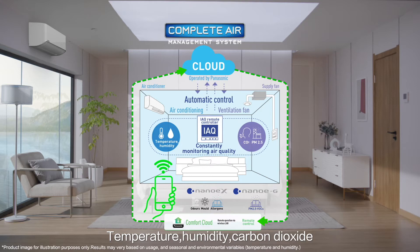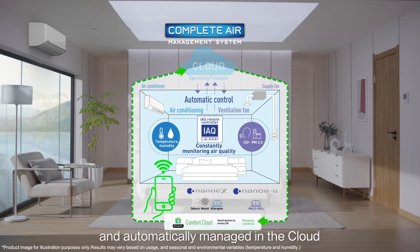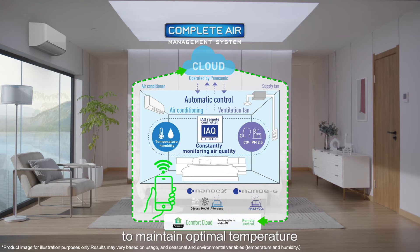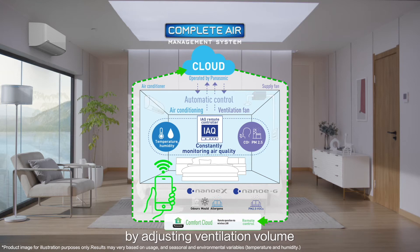Temperature, humidity, carbon dioxide, and PM 2.5 levels are detected and automatically managed in the cloud to maintain optimal temperature, humidity, and air quality, while minimising the operational load on the air conditioner by adjusting ventilation volume.